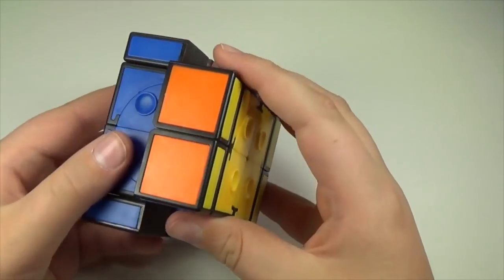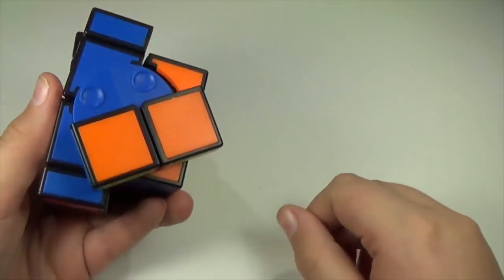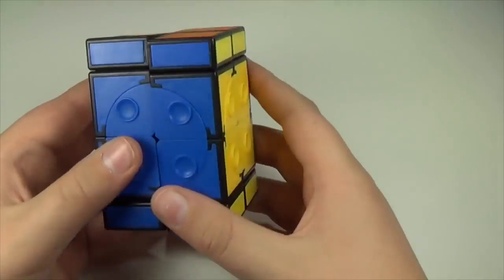Up next is the Shengxiao Crazy 2x2x4. I originally got this to make a 2x2 cross cube, because it pretty much is a 2x2 cross cube, but I haven't done anything with that yet.